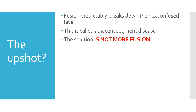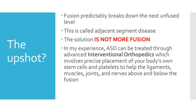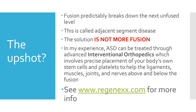The solution is certainly not more fusion — that's really a dumb idea, so stay away from that. In my experience, adjacent segment disease can be treated through advanced interventional orthopedics, which involves the precise placement of your body's own stem cells and platelets to help the ligaments, muscles, joints, and nerves above and below the fusion hang in there. More fusion just causes more problems. See Regenexx.com for more info on this concept. Thanks so much for watching.